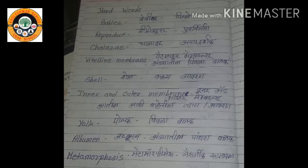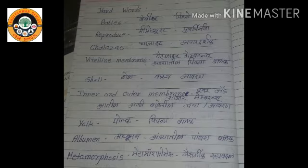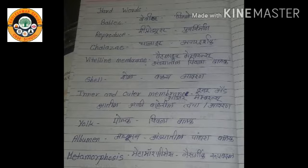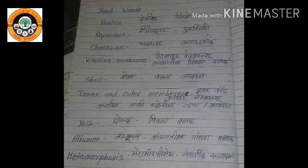Babies, spelling B-A-B-I-E-S, babies means 'spilling' (offspring). Reproduce, spelling R-E-P-R-O-D-U-C-E, reproduce means 'punar nirman' (reproduction). Chalaza, spelling C-H-A-L-A-Z-A, means 'apar darshak.' Vitelline membranes, spelling V-I-T-E-L-L-I-N-E M-E-M-B-R-A-N-E, means 'underthil piwadabalak.'